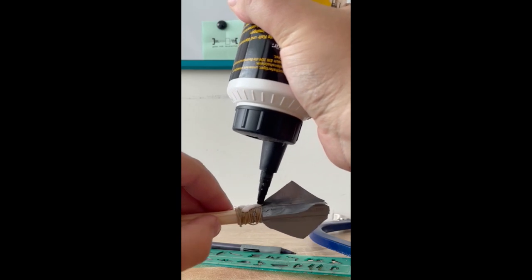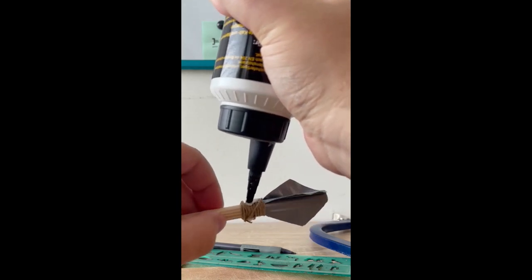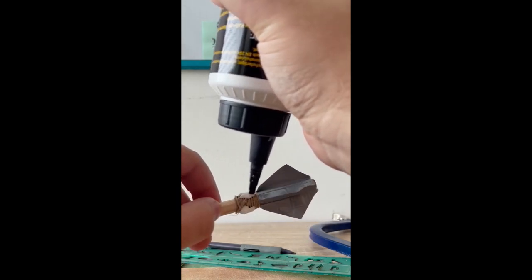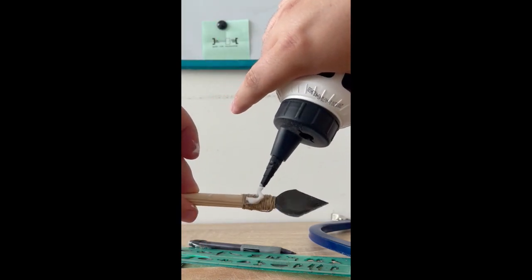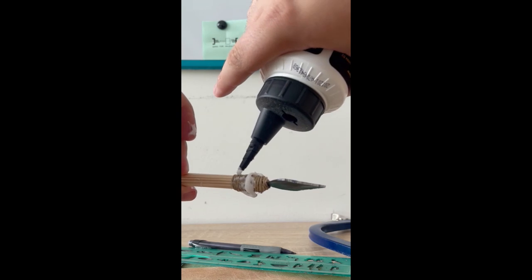Next I saturated the string with a generous amount of wood glue to keep it in place. This will help prevent it from coming undone when I use the crossbow bolt.